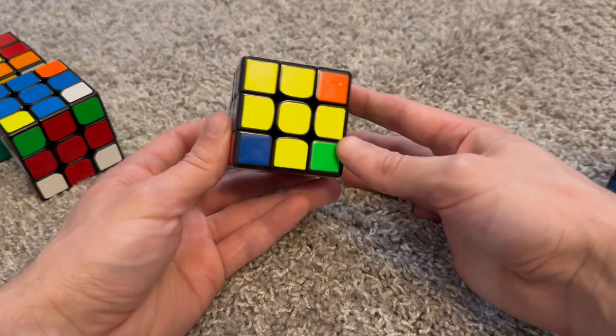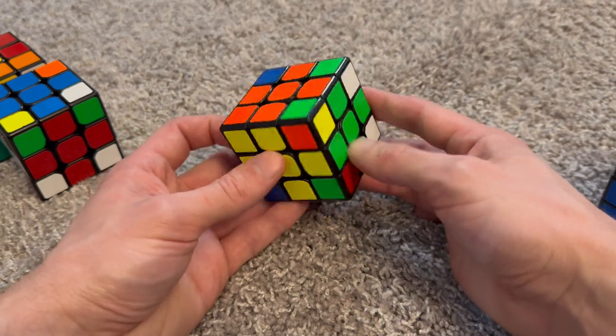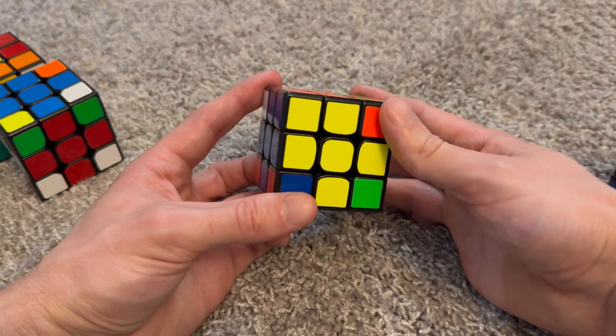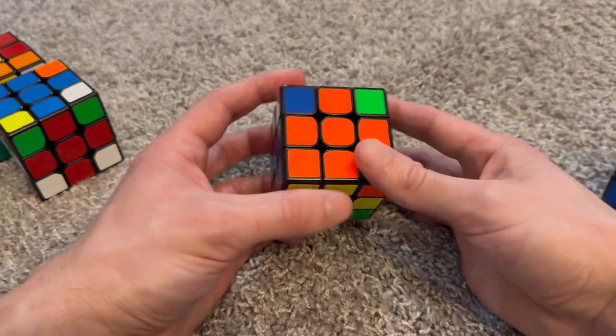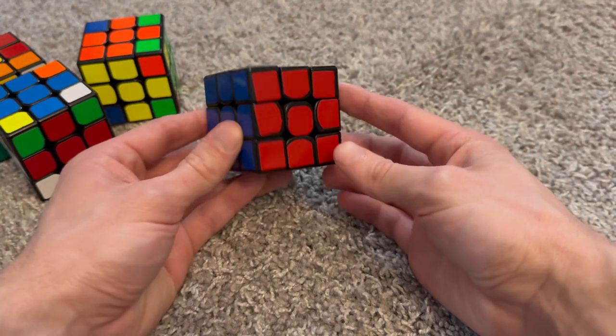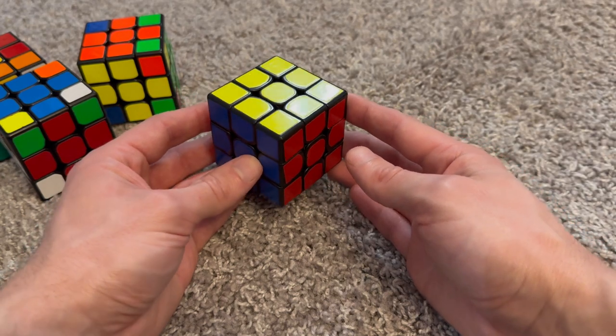The next step would be to put all the corners in place without moving the edges. So here's an example where it looks like there are seven corners that are oriented incorrectly, but they're all positioned, and then once you rotate all the corners, then you would have a solved cube.